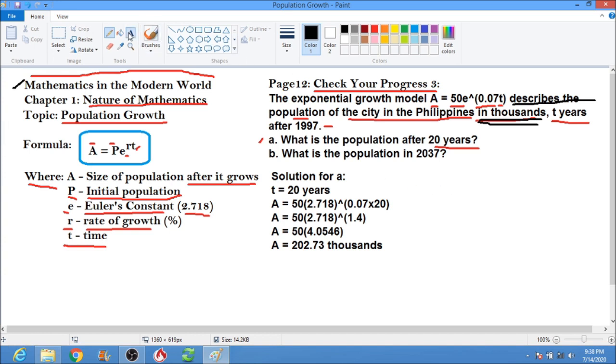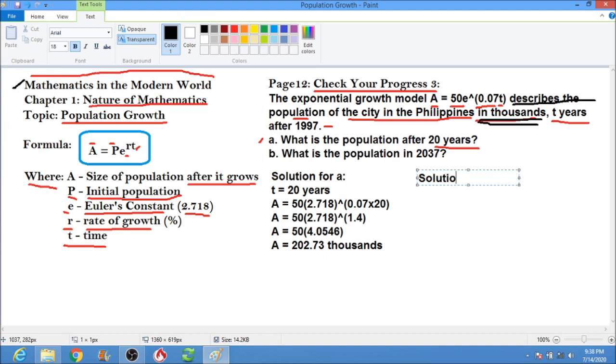Next, for letter B. Solution for letter B. What is the population in 2037? Solving for t again, we are going to find the value of t. T equals 2037 minus 1997. That will equal 40 years.